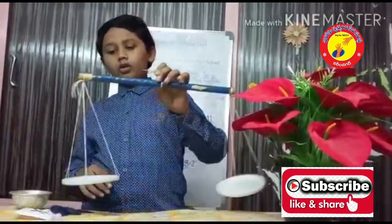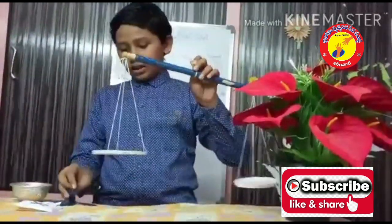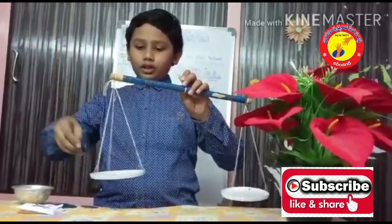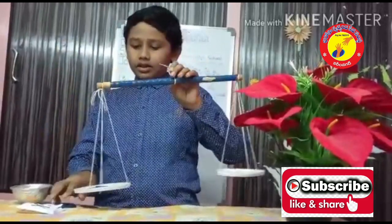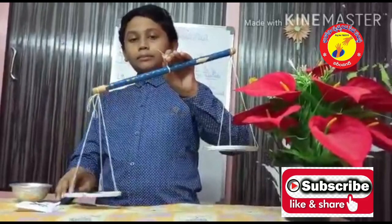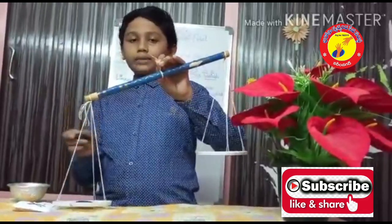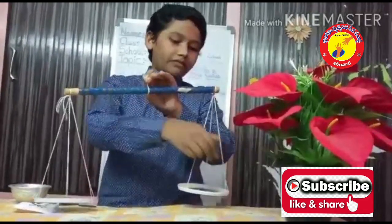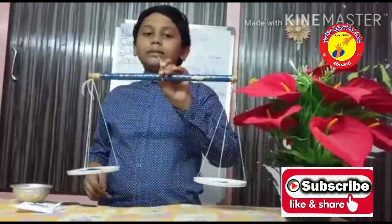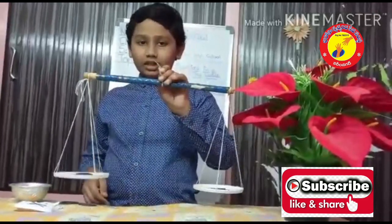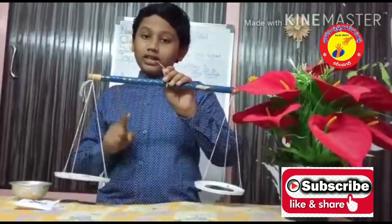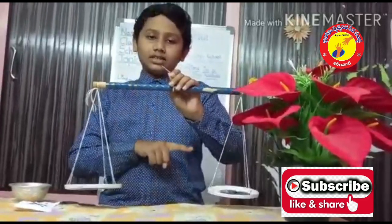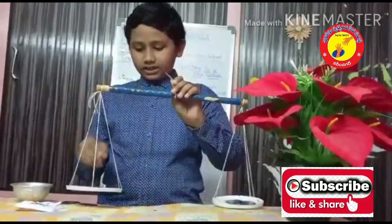First, I will show how this instrument works. I am going to add three coins onto my right hand side — it is imbalanced. To make it balanced, I am going to add three more coins to my left hand side, and it becomes balanced. With this condition, we can say LHS is equal to RHS.